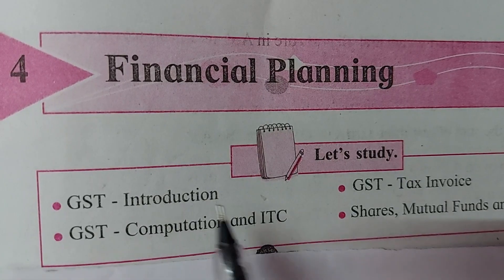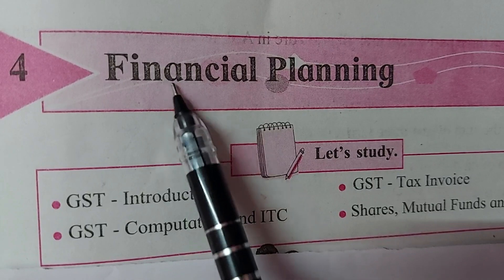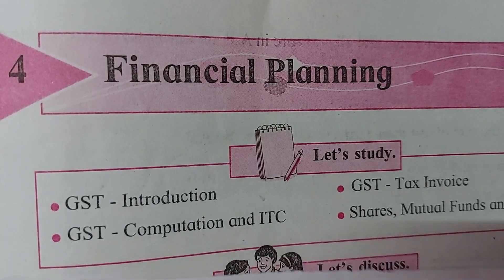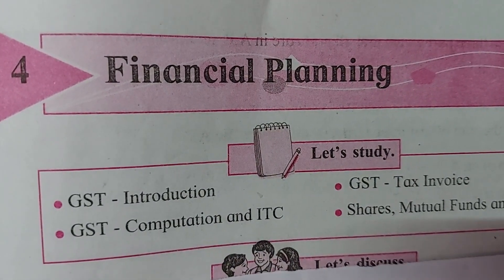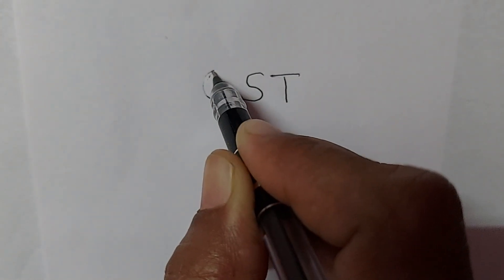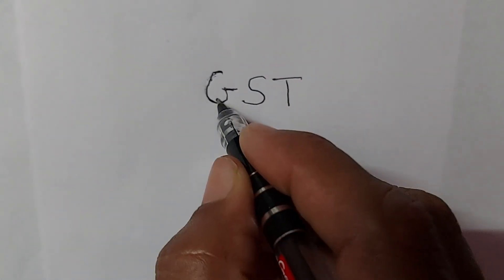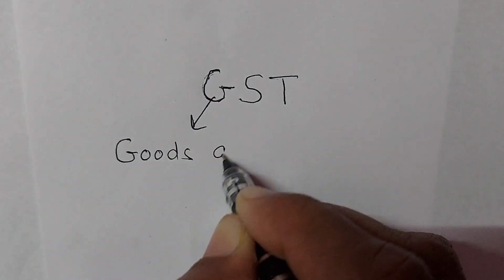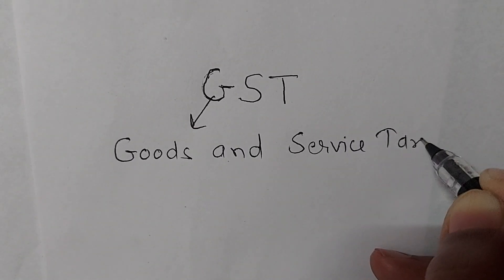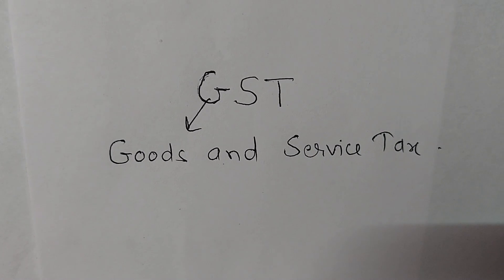Hello everyone. Today in this session we are going to discuss financial planning, chapter 4 of standard 10th algebra. Let us see about GST. In India, nowadays only one tax system is in practice for business, and that tax system is GST. What is the full form of GST? GST stands for Goods and Service Tax.